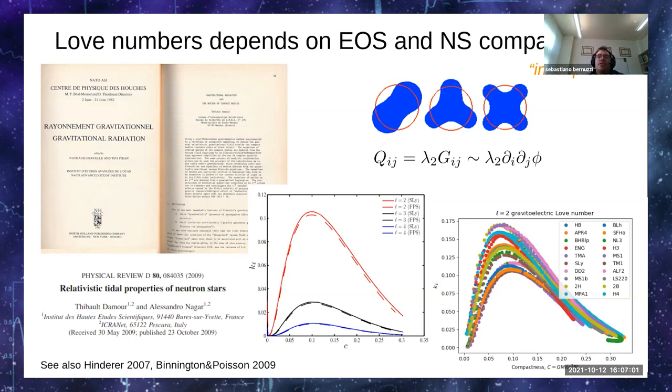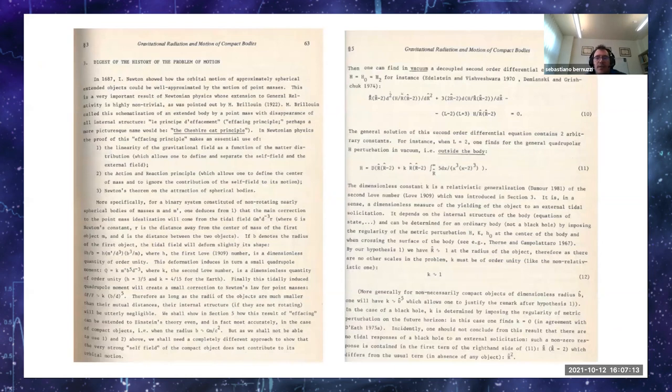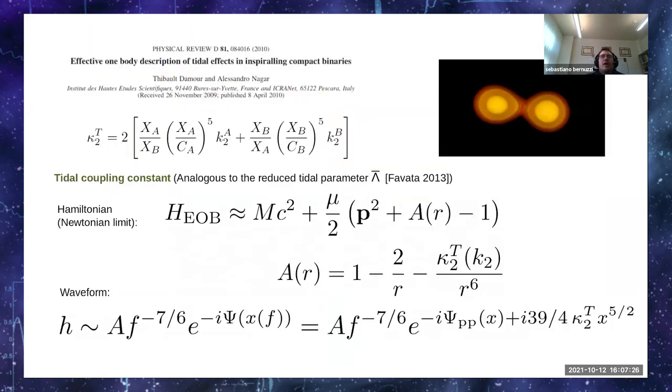If such coefficients can be measured from a gravitational wave, then one can imagine that this measurement can constrain the neutron star structure and the equation of state. Here are the relevant pages from Thibault's monograph - I recommend reading it, it's very amusing and certainly a fundamental contribution. So how does this polarizability coefficient, tidal polarizability coefficient, enter the binary neutron star dynamics?